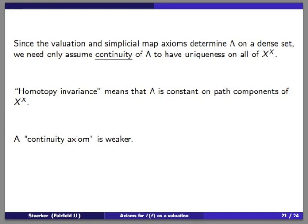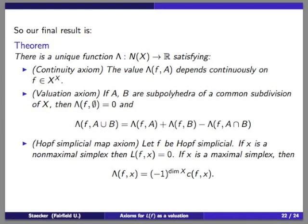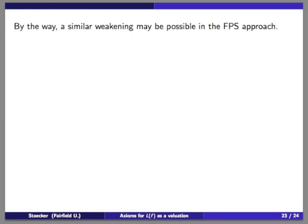Our final result: there is a unique function satisfying a continuity axiom — weaker than homotopy invariance — the valuation property, and the normalization property. Looking at every paper about axioms for the Lefschetz number I could find, they all use homotopy invariance; no one has attempted to weaken it. This weakening only makes a difference if you assume the invariant is real-valued to begin with. If you state up front that it is integer-valued, there is no difference between continuity and being constant on homotopy classes.